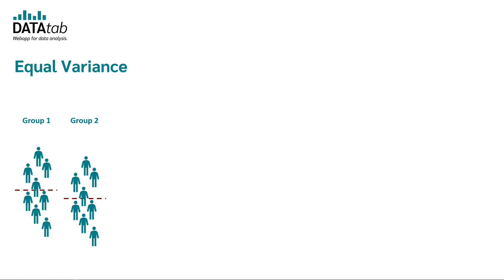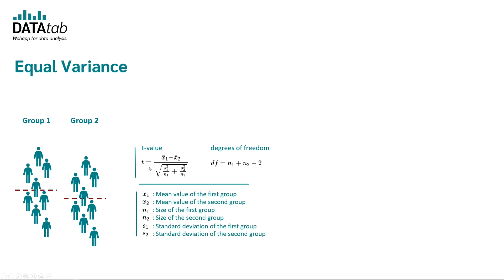For equal variance, we have group 1 and group 2 — both with the same variance — and we want to know if the mean values are equal. The t-value is calculated using the mean value of the first group, the mean value of the second group, the standard deviation of each group, and the sample sizes of each group. We also need the degrees of freedom, and together with the degrees of freedom and the t-value, a statistics software like Datatab can calculate the p-value for you.